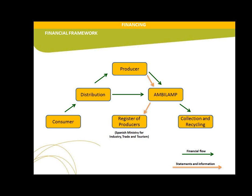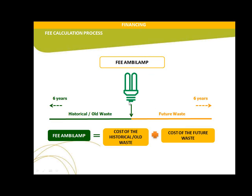Financing is a very important element. You must find in the legislation a way to assign extended responsibility to producers, but you need a very strong and clear financing system. In Ambilamp, the consumer pays the distribution, distribution pays the producer, and the producer pays Ambilamp every three months. Producers are registered in the Ministry of Industry and every three months report their sales. They pay Ambilamp for collection and recycling depending on sales. This fee is used for two things: to pay the cost of historical waste this year, and to create a provision for the cost of future waste in coming years.